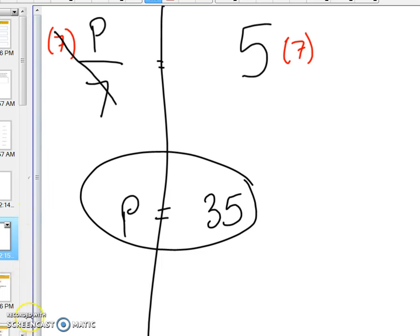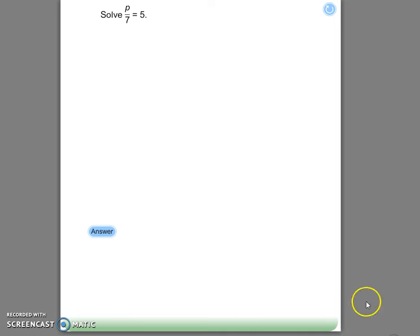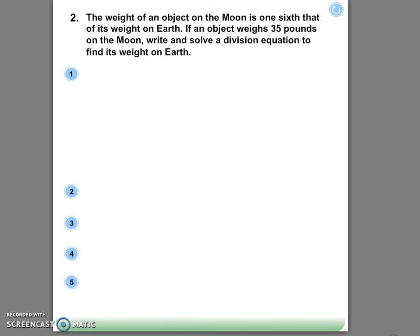Now we also looked at some word problems. So let's quickly take a look at some word problems. The weight of an object on the moon is one-sixth that of its weight on earth. If an object weighs 35 pounds on the moon, write and solve a division equation to find its weight on earth.